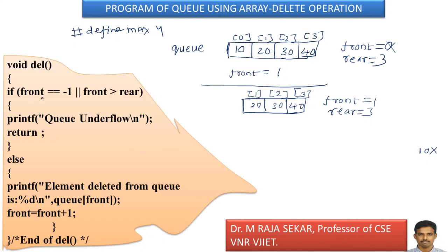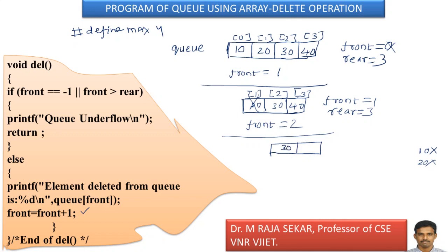Again, let me assume this function is called. Front equal to equal to minus 1: front is 1, so 1 equal to equal to minus 1 is false. Front greater than rear: 1 greater than 3 is false. Both are false, so we go to the else block. Element deleted from Q is %d, Q of front. Front means 1, so Q[1] is 20. Therefore, element deleted from Q is 20. This element is also deleted. After deleting, front is updated: front equal to front plus 1, previous value is 1, so front equals 2. We are left with only two elements: 30 and 40. Front is 2, rear is 3.